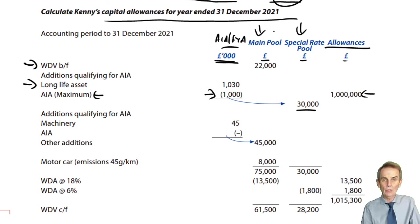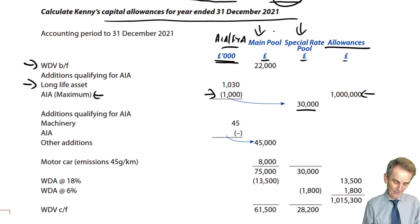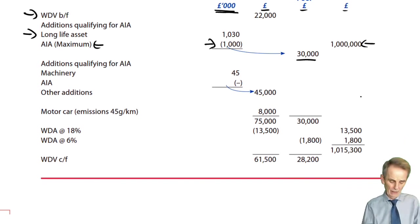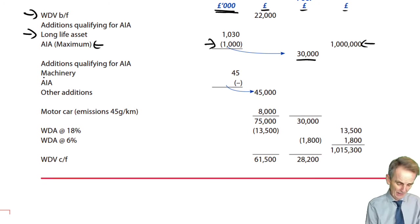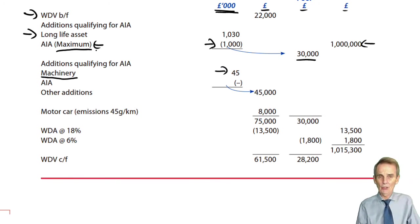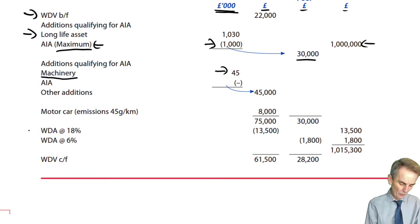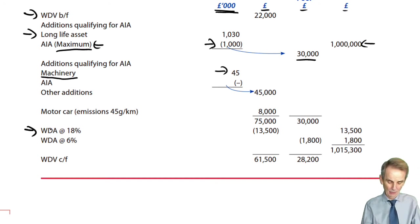We knew we had a main pool because we had the tax written down value brought forward. There are two additions qualifying for AIA, and the second one is the main pool expenditure — just your normal item of plant and machinery, £45,000. There's no AIA available; you've already used the maximum on the special rate pool expenditure, the long-life asset. Therefore that £45,000 will be allocated to the pool, upon which we will eventually claim our 18% WDA.